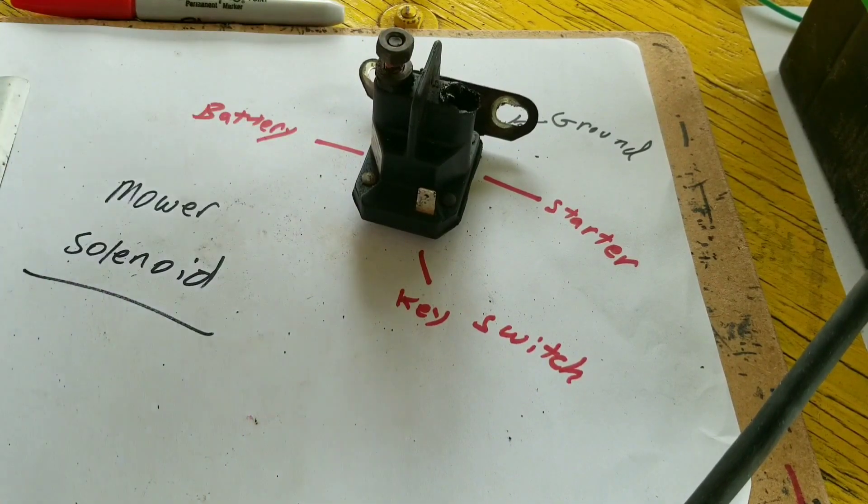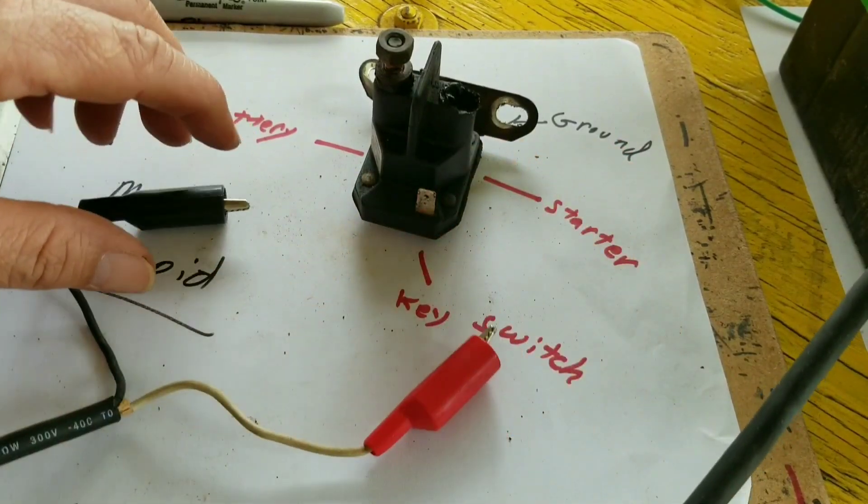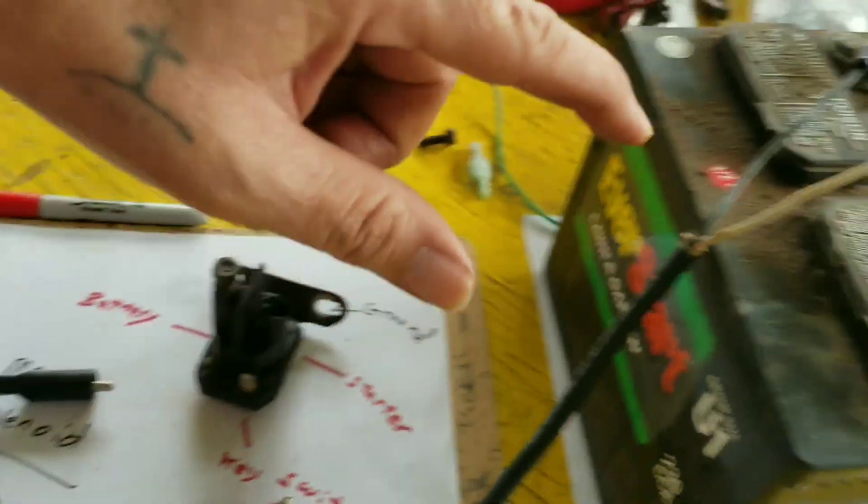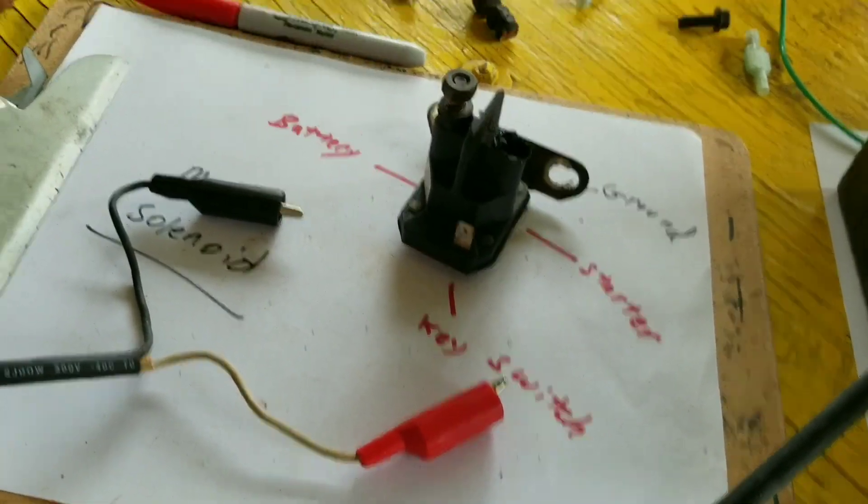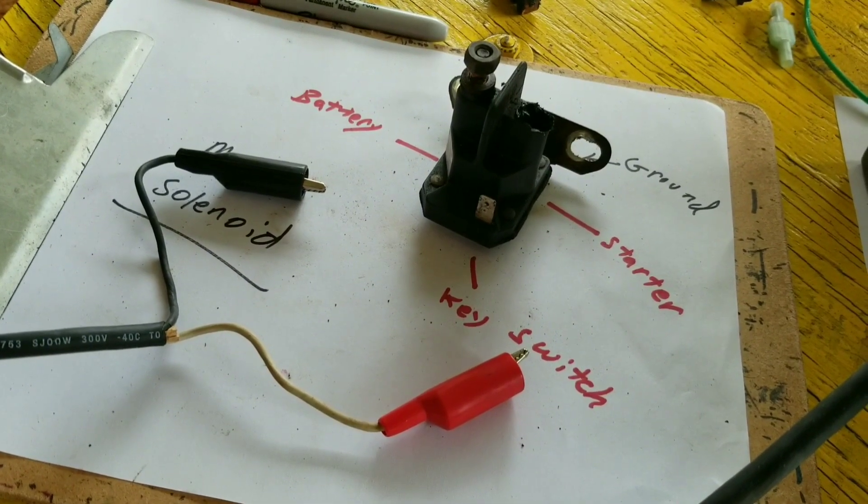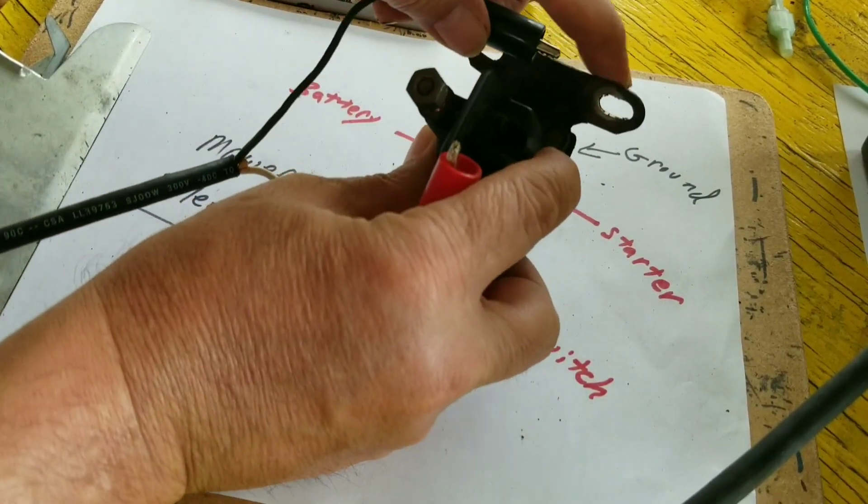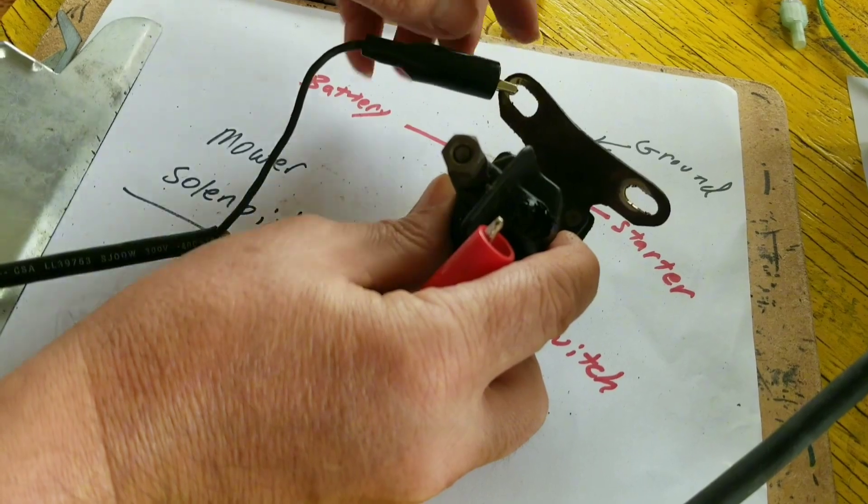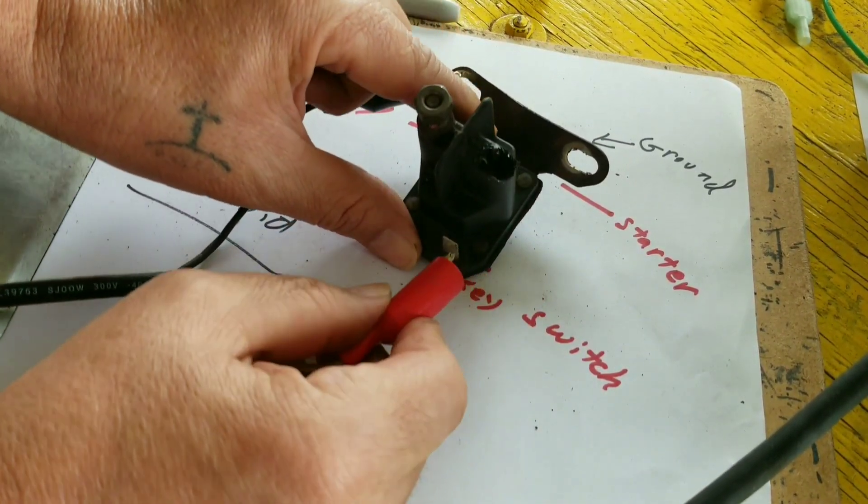What would normally happen, your key switch is hooked up and everything. When you turn the key switch, this will be hooked to the ground when you hook this up to your mower. That's the ground right there already hooked up. So when you're hooked up to the mower, the ground's hooked up, and when you turn the key...